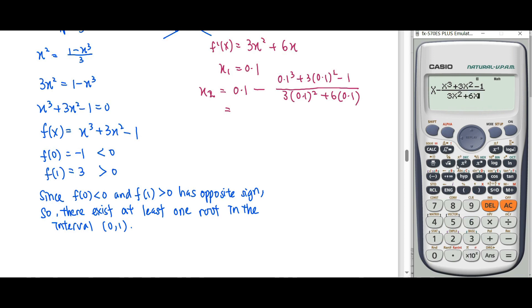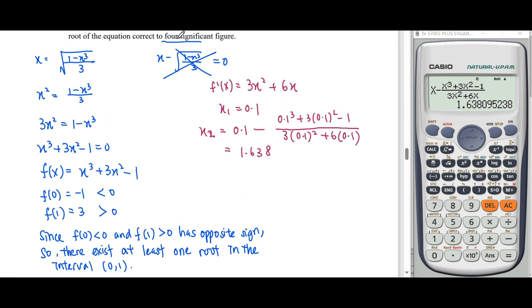We calculate with initial value 0.1. When we do the calculation, we get x₂ = 1.63810. To four significant figures with rounding, we continue for the next approximation x₃.